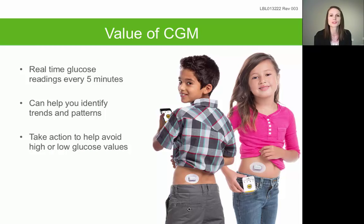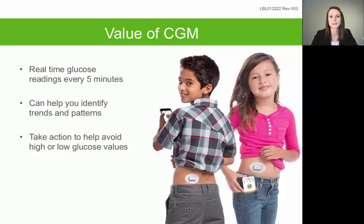Your Dexcom should provide you with a lot of value in managing your diabetes. You will see real-time continuous glucose readings that will update every five minutes. You will also be able to view trend arrow information telling you the speed and direction of your glucose, and this should help you take a more proactive approach when managing your diabetes. Because your Dexcom is measuring your glucose continuously, you and your physician will have extensive glucose information to look back on, and this will help you identify your individual trends and patterns — where your glucose is typically high and where it's typically low.